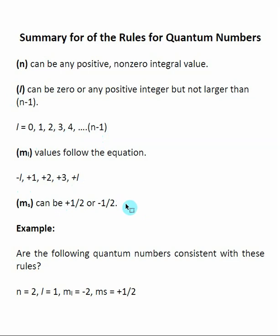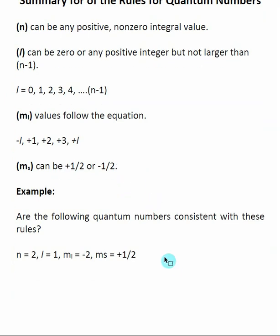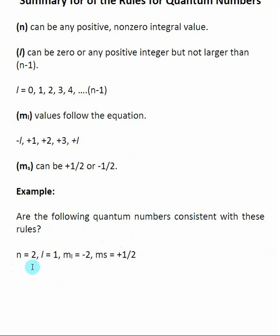A classic type of question you will see on an exam is: you will be given four quantum numbers, and the question will be, are these quantum numbers consistent with the rules? What I like to do is start at the left and ask myself whether each number follows the rules.